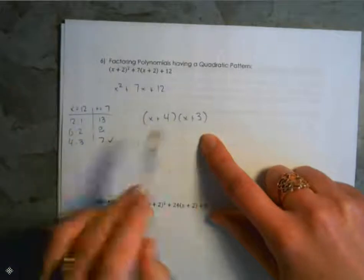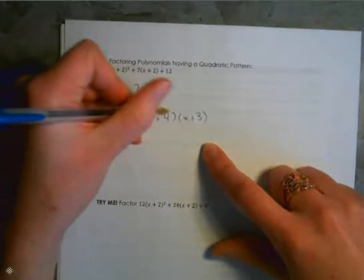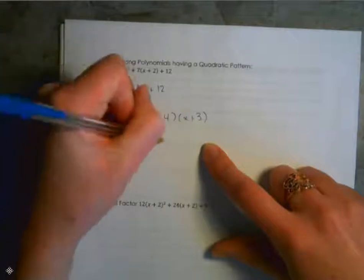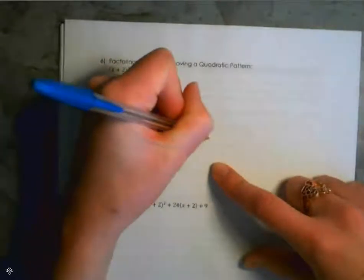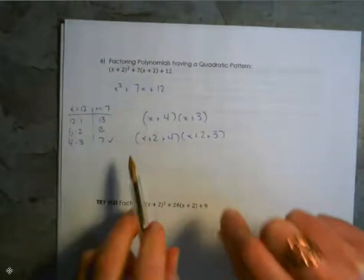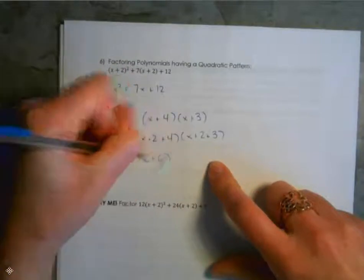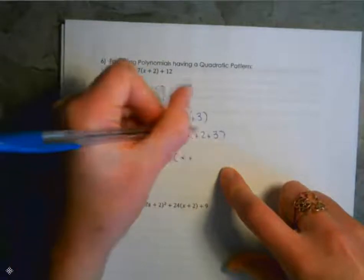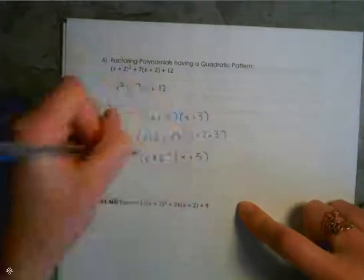Now we substitute x plus 2 back in: x plus 4 becomes x plus 2 plus 4, and x plus 3 becomes x plus 2 plus 3. Now combine like terms: 2 plus 4 is 6, so the first bracket is x plus 6; 2 plus 3 is 5, so the second bracket is x plus 5. So our final answer is x plus 6 times x plus 5.